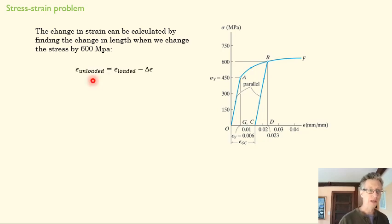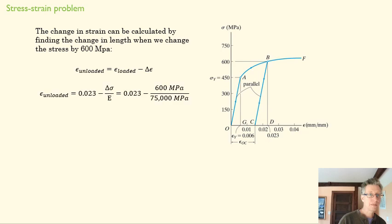So we can use this equation here. Essentially, we're just thinking about the geometry of this diagram. So the initial strain or the plastic strain is 0.023. We're going to go backwards by this amount. In other words, that strain is going to be smaller once the elastic part of the strain is removed.